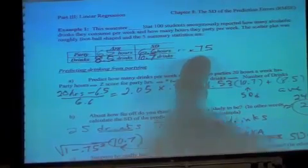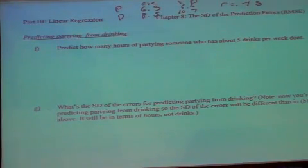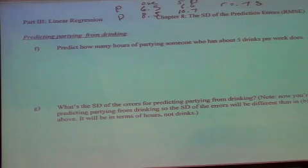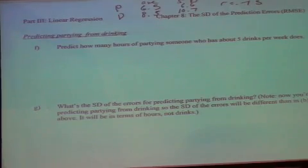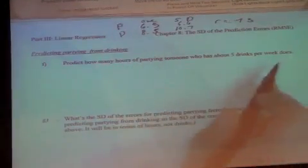Now let's do the same thing, but instead of predicting drinking from partying — which is the natural direction, thinking the more you party the more you drink — we can turn it around. Using the same correlation coefficient and the same four summary statistics, we can predict partying from drinking, and also attach a margin of error to our estimates. The margin of error is the root mean square of the errors, the standard deviation of errors.